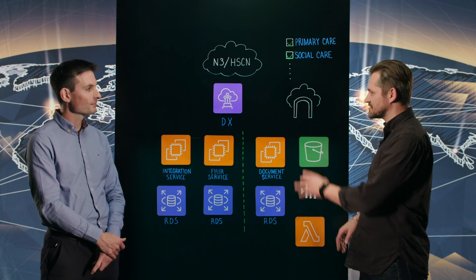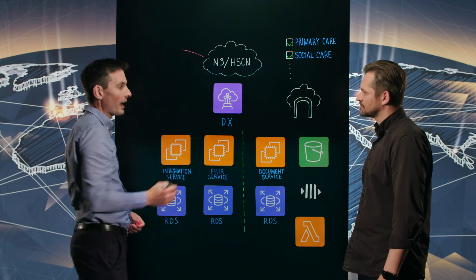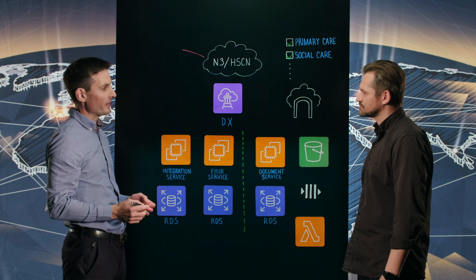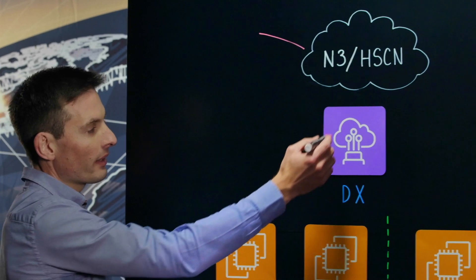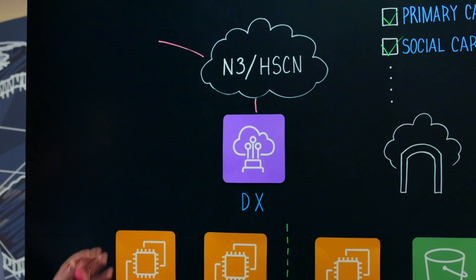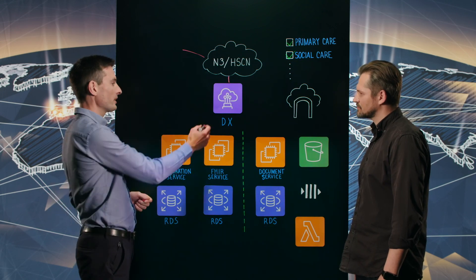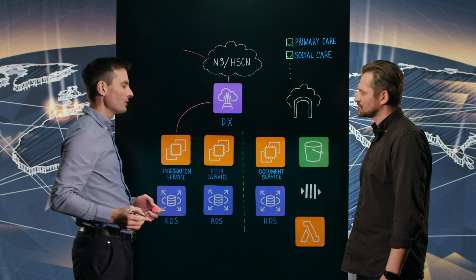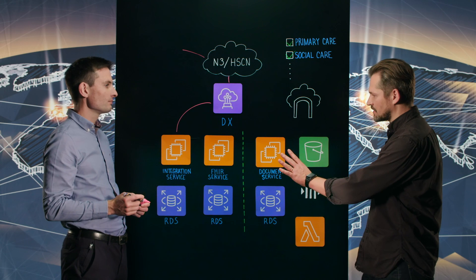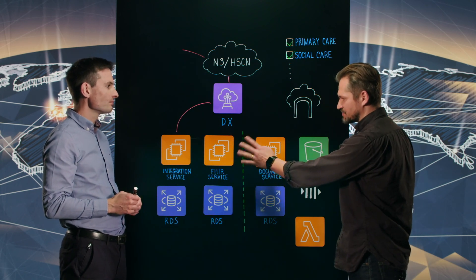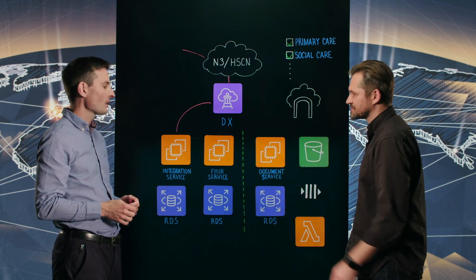Aggregating data sounds like a challenge — let's go right into it. In the NHS, all our users access the solution over the N3 network, which is a secure network provided by the NHS. We use Direct Connect to help provide those data flows into our AWS environment. When a user opens up a patient record, a request is sent to our integration engine.